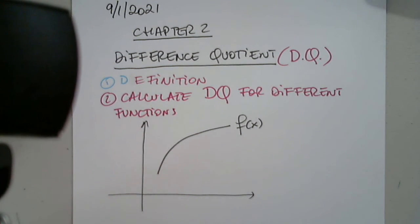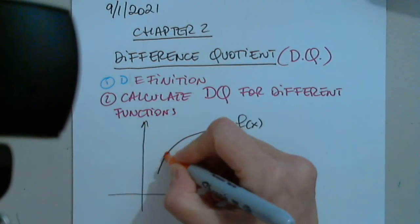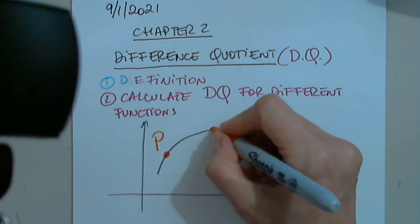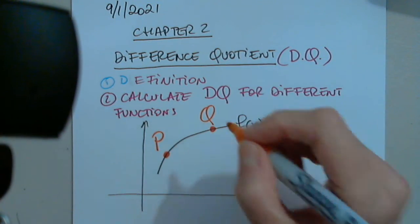So I'm going to pick two points on this graph. Here's one. Let's call it P. Here's another one. Let's call it Q.